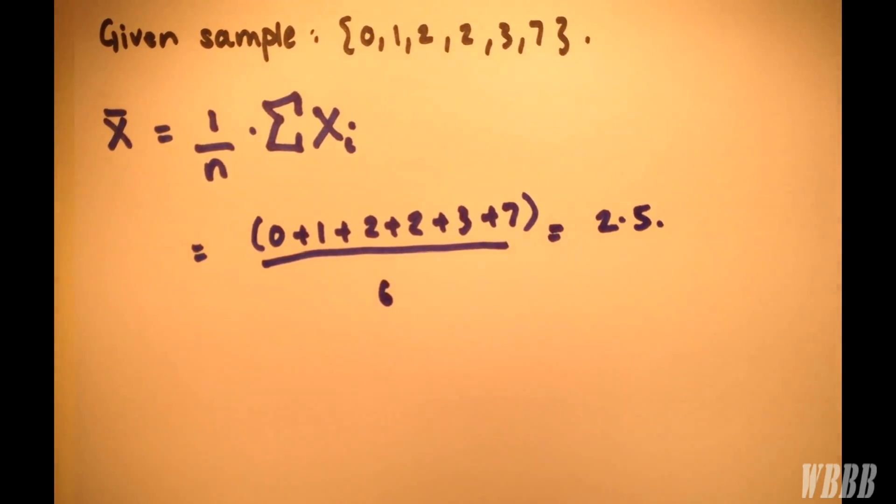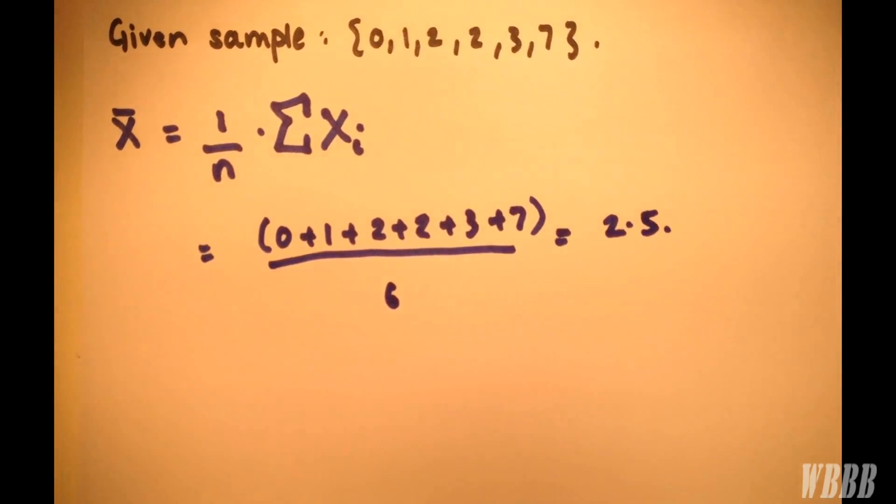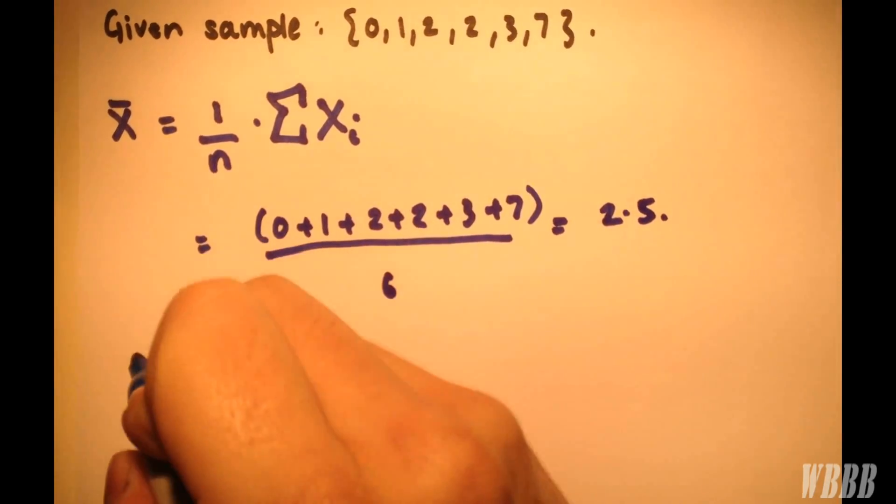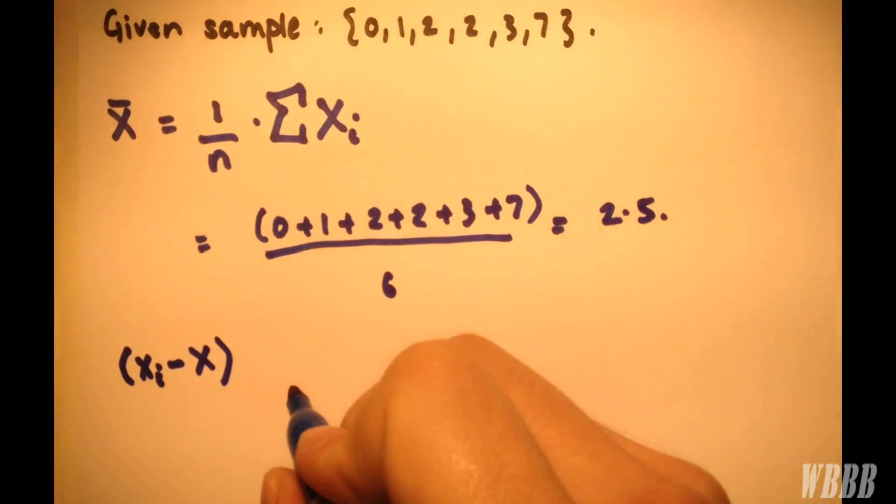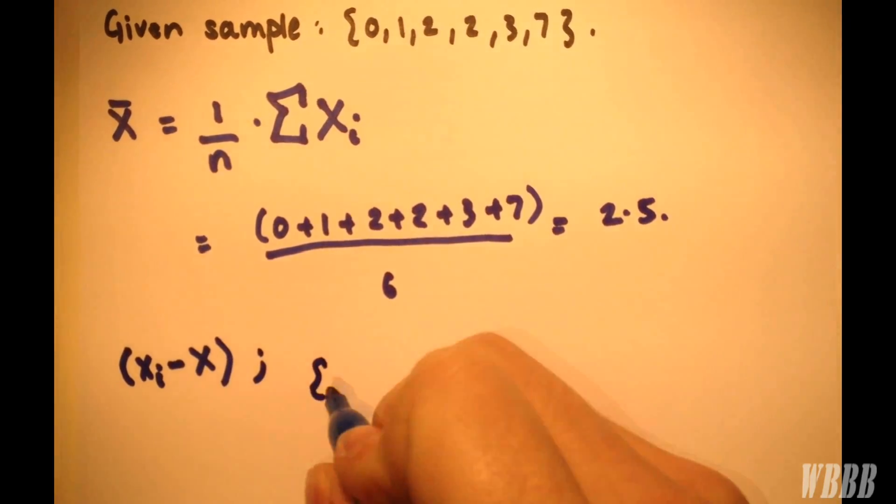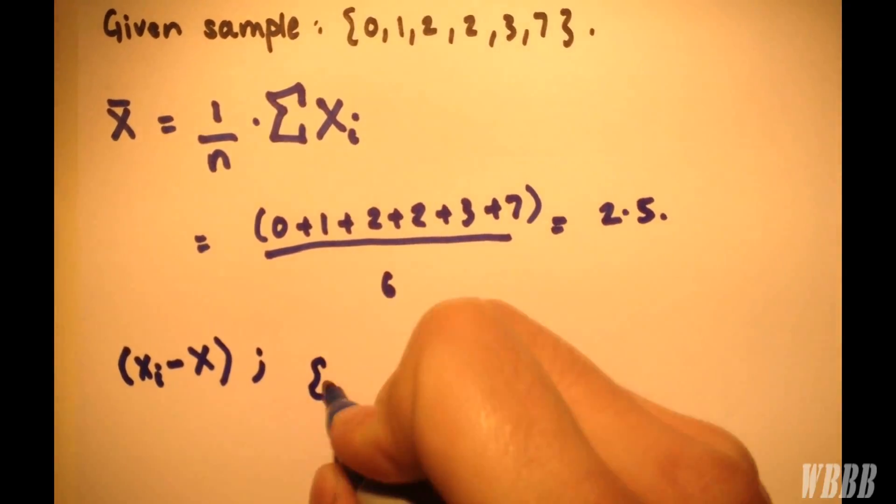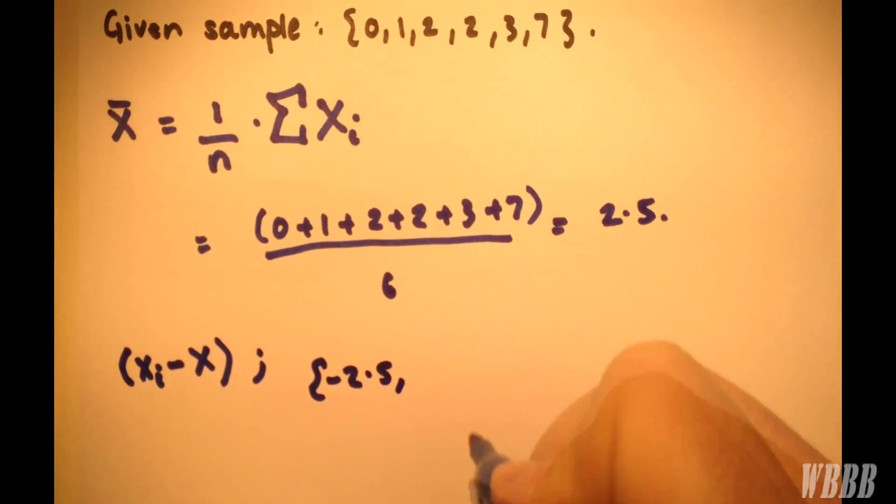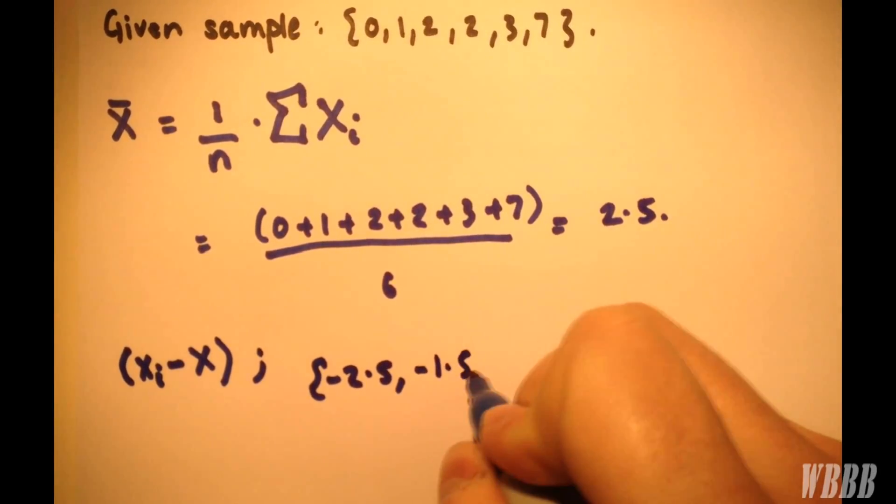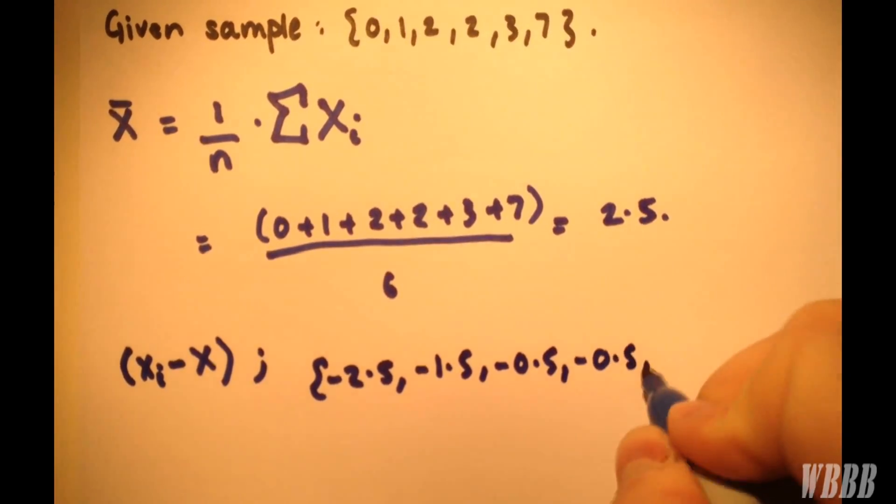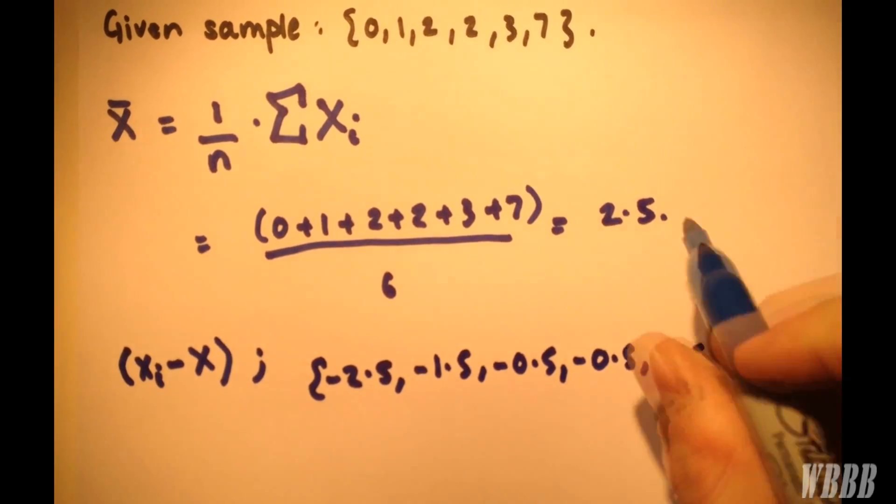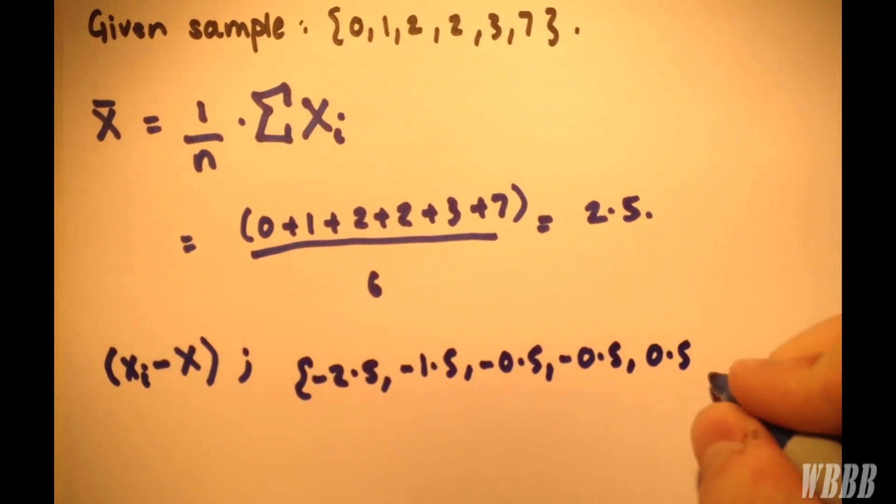So, so far, so good. Now we want to look at the deviations from the mean. How far away is each of the values in the original table from 2.5? Well, 0 is minus 2.5 away from 2.5. And then we have minus 1.5, minus 0.5 twice, 0.5, and then 7 is 4.5 away from the mean.